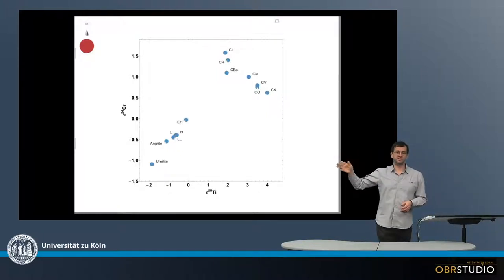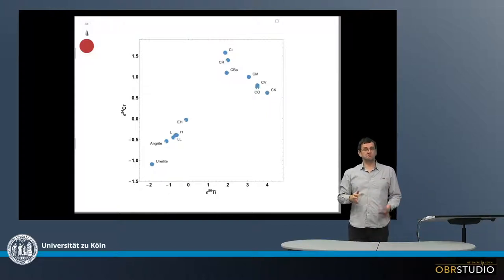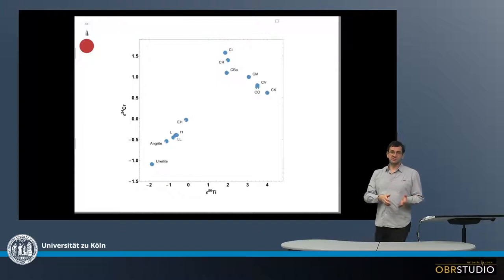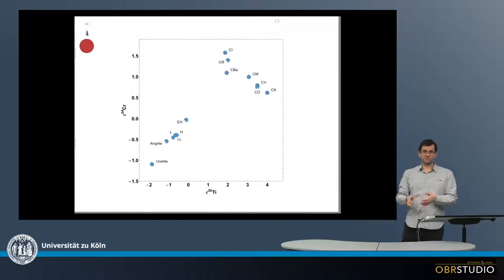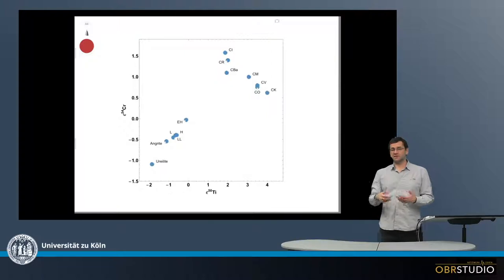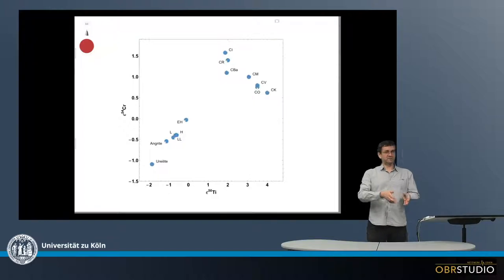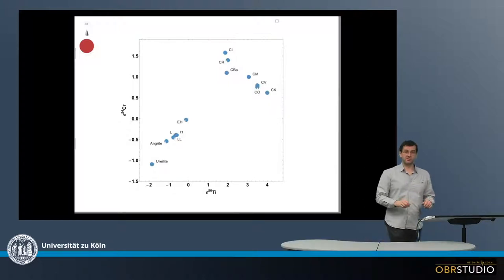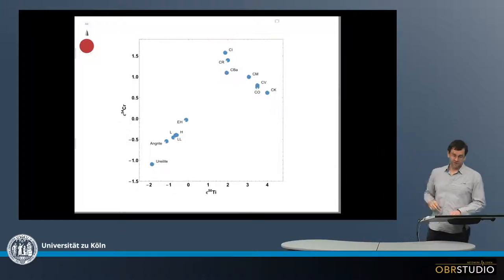So on the x-axis there's titanium-50, and on the y-axis there's chromium-54, both in the epsilon notation. The epsilon notation means deviations of ten thousandths from a standard, and typically has no unit, compared to the delta notation, which is a deviation of a thousandth from a standard and has the unit per mil.